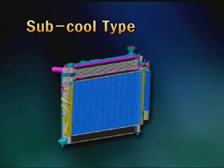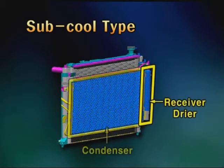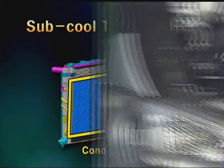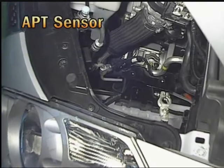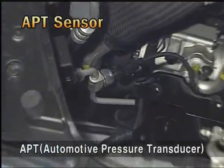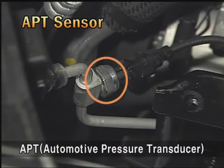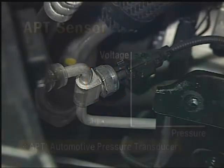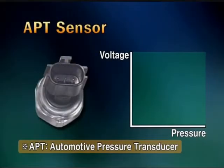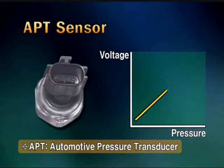The condenser is integrated with the receiver dryer, so it is the sub-cool type of which performance is superior to the conventional one. The APT sensor for detecting refrigerant pressure is installed at the high-pressure pipeline linking between condenser and evaporator. This is made of a semiconductor piezo element and has proportional characteristics in which the output voltage is increased as the coolant pressure is increased.